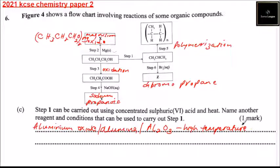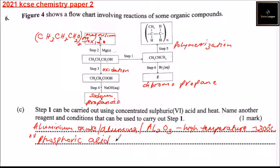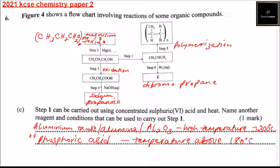The conditions for aluminum oxide are high temperature of about 300 degrees centigrade. Another reagent that can be used is phosphoric acid.